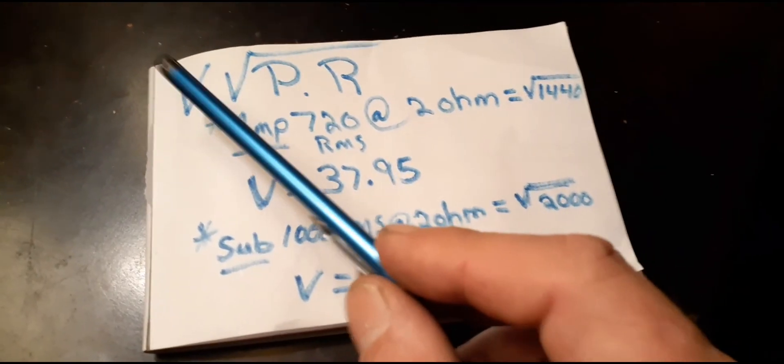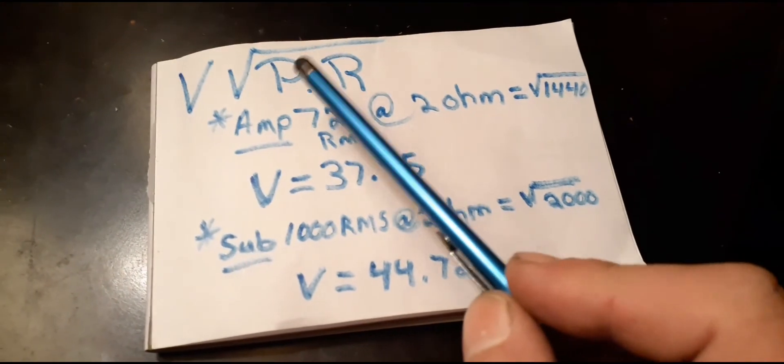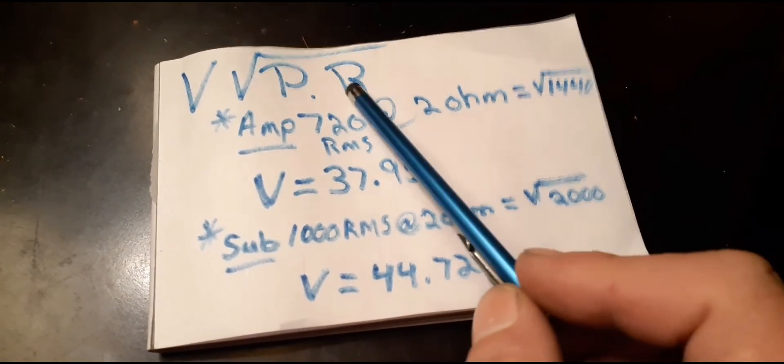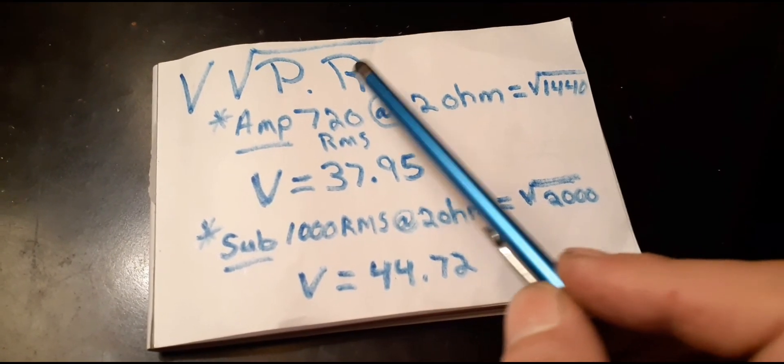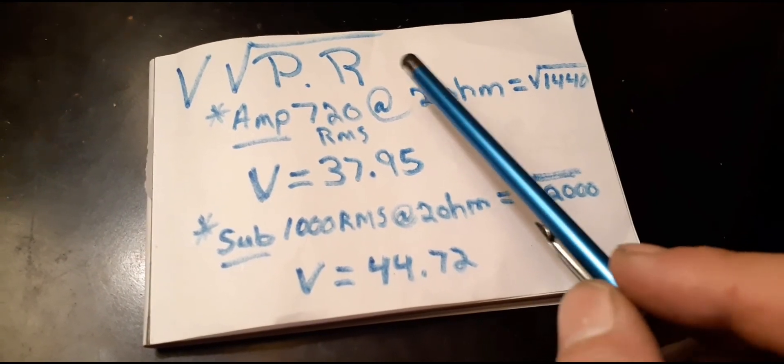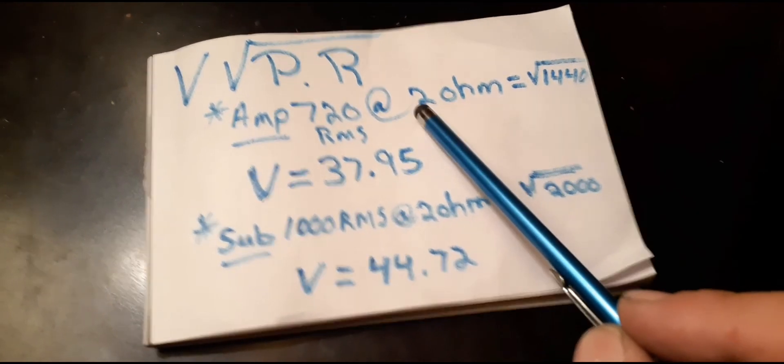Yeah that's how I do it man, it's your desired voltage and then you do power times resistance, whatever you're going to use, whatever you got your subs wired down to. I got a four ohm sub but I got it wired down to a two ohm.